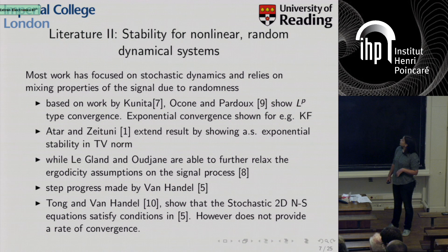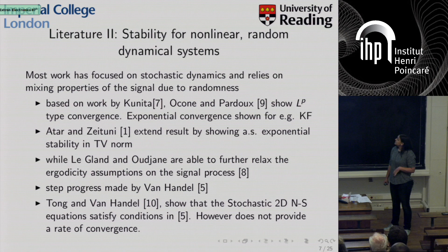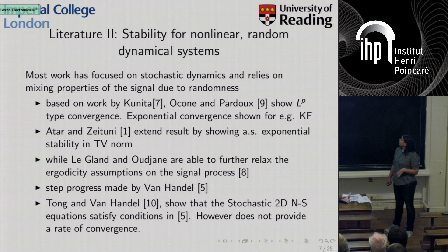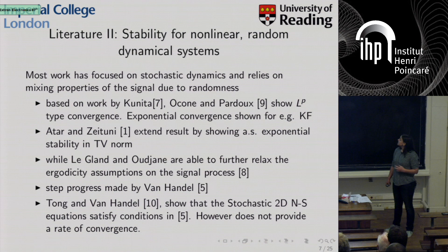For nonlinear random dynamical systems, most work has focused on stochastic dynamics and relies on the mixing properties of the signal due to stochasticity. This started with work by Kunita around 1970, showing the filtering process is Markovian under some conditions. Based on this, Ocone and Pardou showed L^p-type convergence with actual convergence rates for particular cases such as the Kalman filter. Attar and Zaytouni then extended the result, showing almost sure stability in the total variation norm.